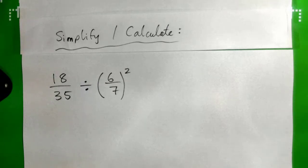Alrighty, so we've got 18/35 divided by (6/7) squared, right?